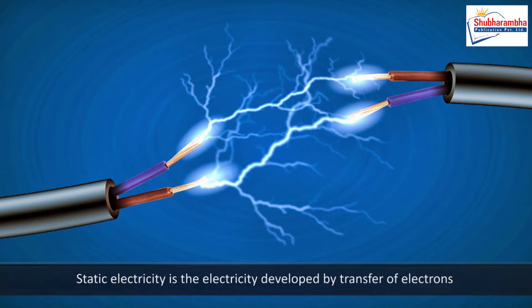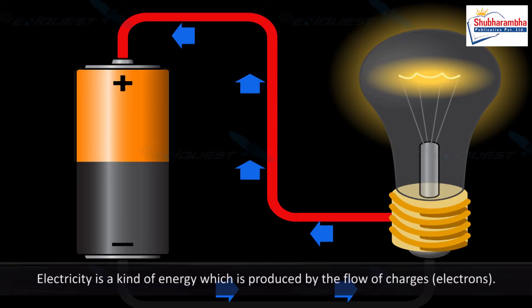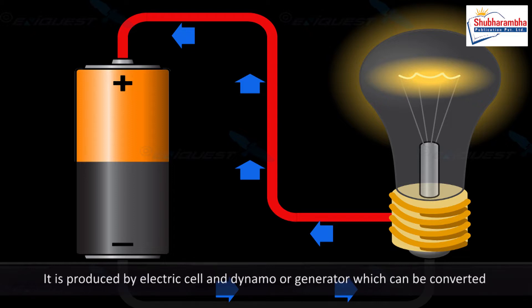Static electricity is the electricity developed by transfer of electrons through friction or rubbing. Current electricity is a kind of energy which is produced by the flow of charges, electrons. It is produced by electric cell and dynamo generator which can be converted into different other forms of energy by using various devices.